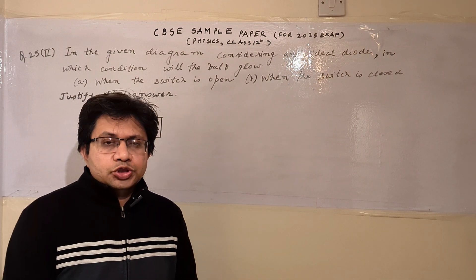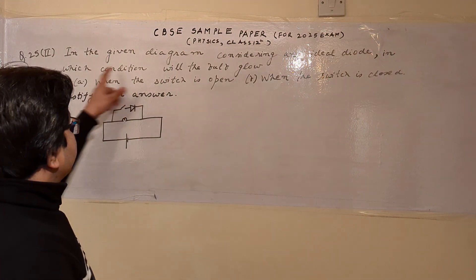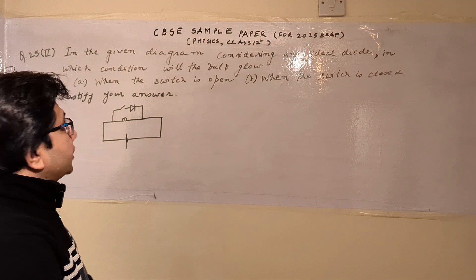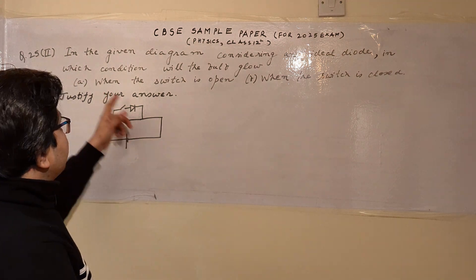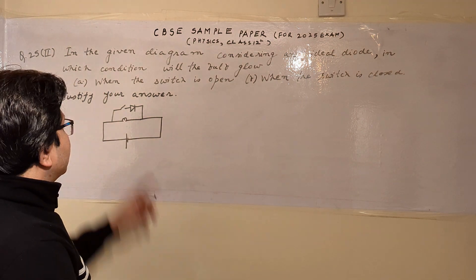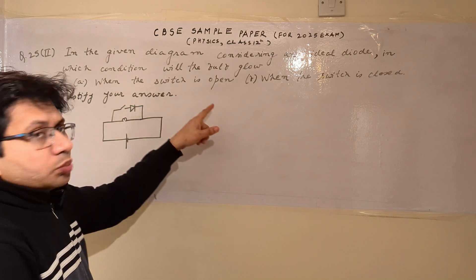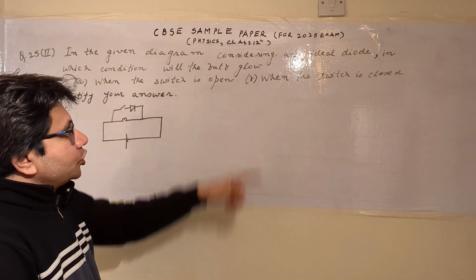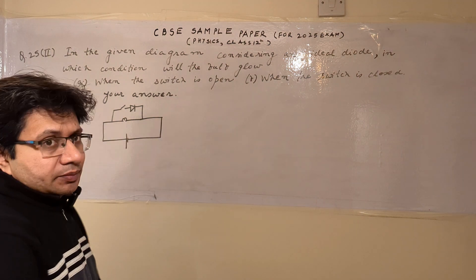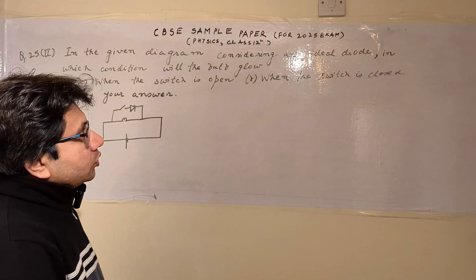Hello students, the question is: in the given diagram, considering an ideal diode, in which condition will the bulb glow? Option A: when the switch is open. Option B: when the switch is closed. Justify your answer.